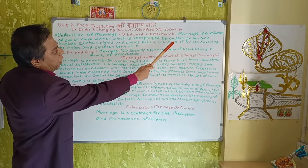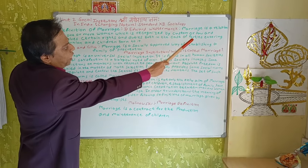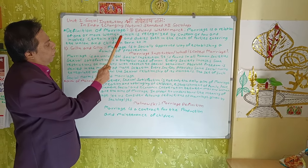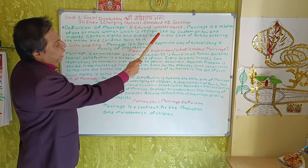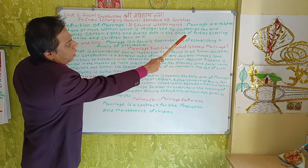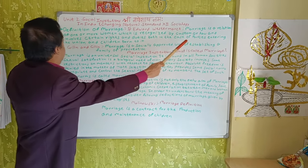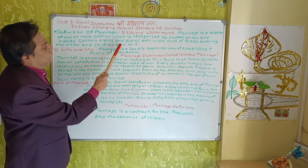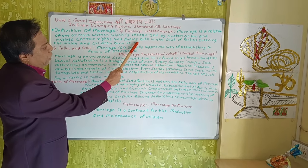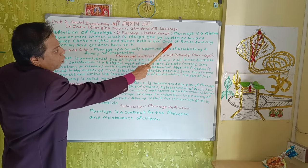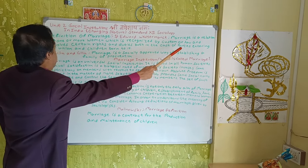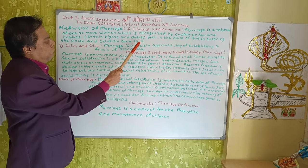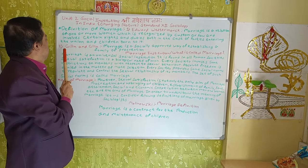Edward Westermark: Marriage is a relation of one or more women which is recognised by custom or law and involves certain rights and duties, both in the case of parties entering the union and children born to it.